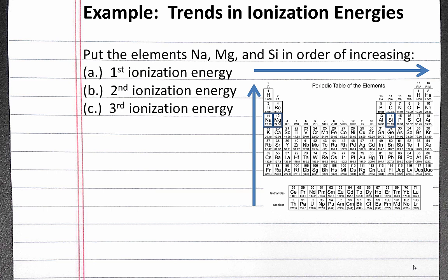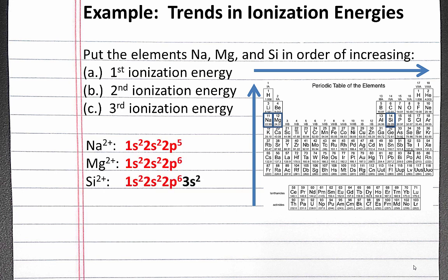For the third ionization energy, we need to write the electron configurations for the ions from which we're removing the third electron: Na²⁺, Mg²⁺, and Si²⁺. We are removing core electrons from both sodium and magnesium, and a valence electron from silicon. So our order of increasing third ionization energy is silicon, then sodium and magnesium. Silicon has the lowest third ionization energy because it's removing a valence electron. When comparing sodium and magnesium, since we're removing core electrons from both, it follows our pattern of increasing going up and to the right in the periodic table.